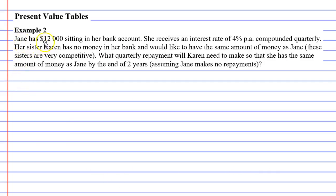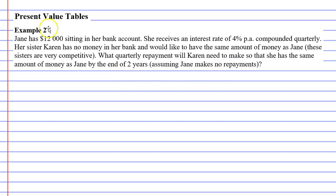Jane has $12,000 sitting in her bank account and receives an interest rate of 4% per annum compounded quarterly. Her sister Karen has no money in her bank and would like to have the same amount of money as Jane. What quarterly repayment will Karen need to make so that she has the same amount of money as Jane by the end of two years, assuming Jane makes no repayments? There's quite a lot of information here, so let's break this into two parts.